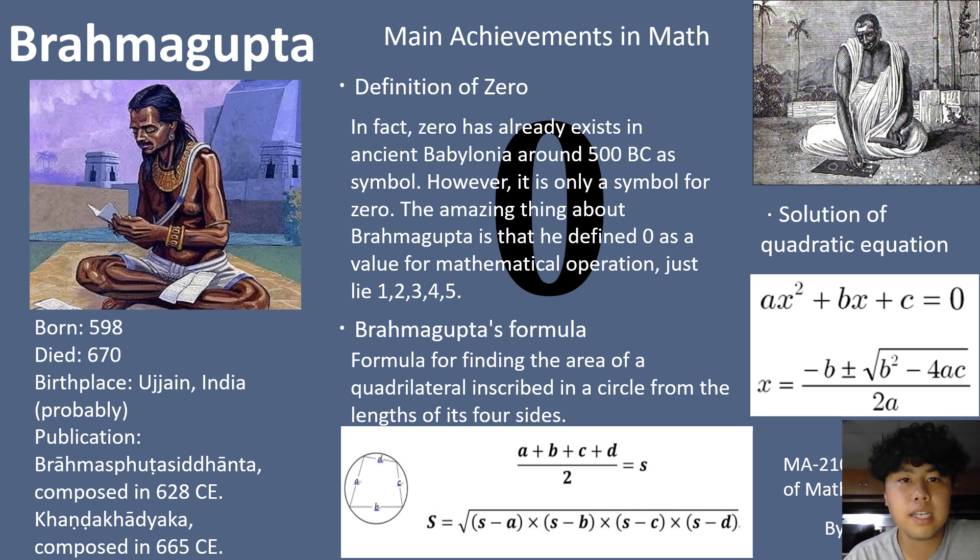And secondly, he is also a researcher of a quadratic equation. He invented a formula called the Brahmagupta's formula to find the area of quadrilateral inscribed in the circle from the length of its four sides.